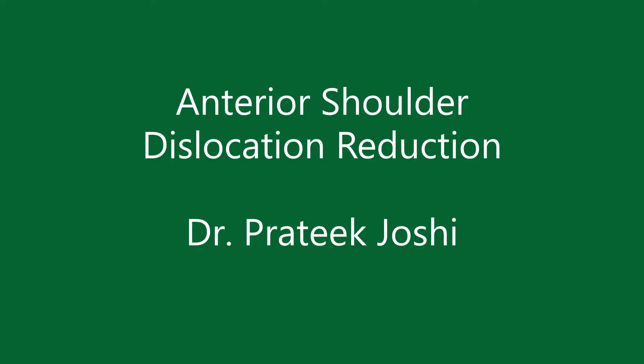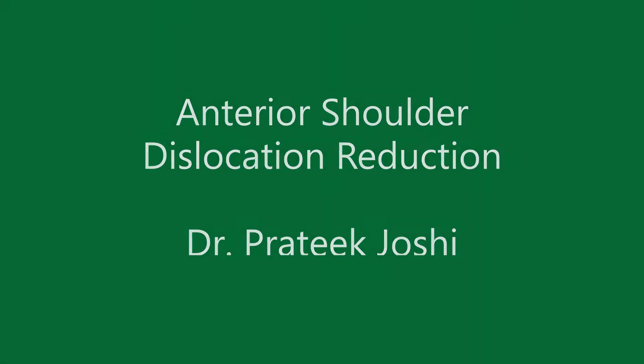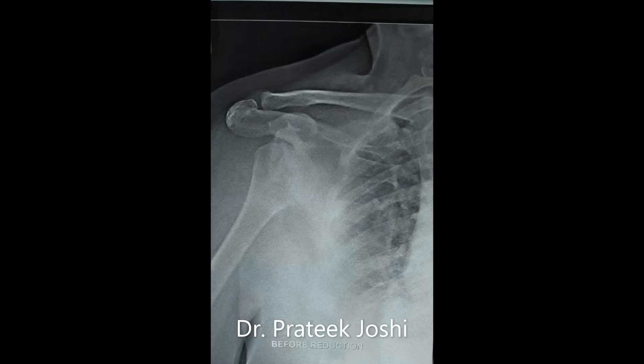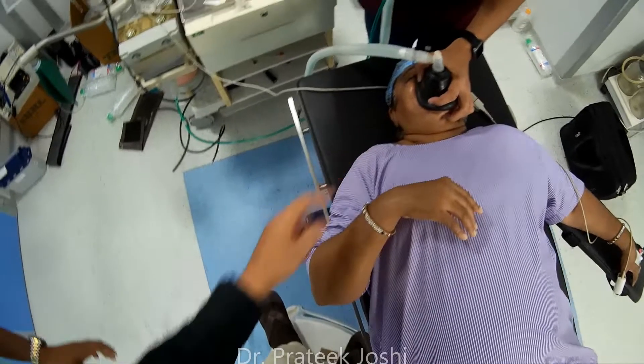Our patient is a 50-year-old lady who fell down on an outstretched right hand and dislocated her right shoulder. An X-ray was done which shows classical anterior shoulder dislocation.